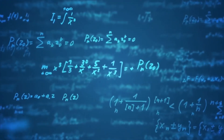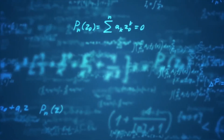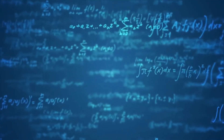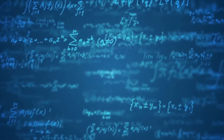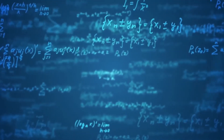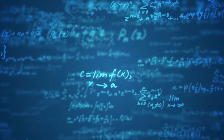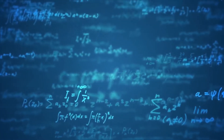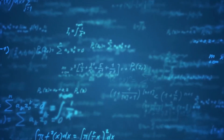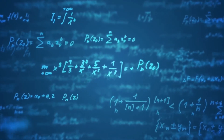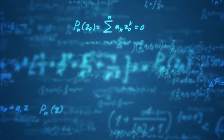Diameter Symbol. Phi is the symbol that is used in engineering to represent diameter. This symbol is commonly used in technical specifications and drawings. For example, Phi 25M means the diameter of the circle is 25 millimeters.